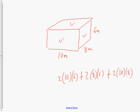So I have 2 times 60 which is 120, and 2 times 48 which is 96, and 2 times 80 which is 160. Adding those all up gives 286 square meters of surface area.